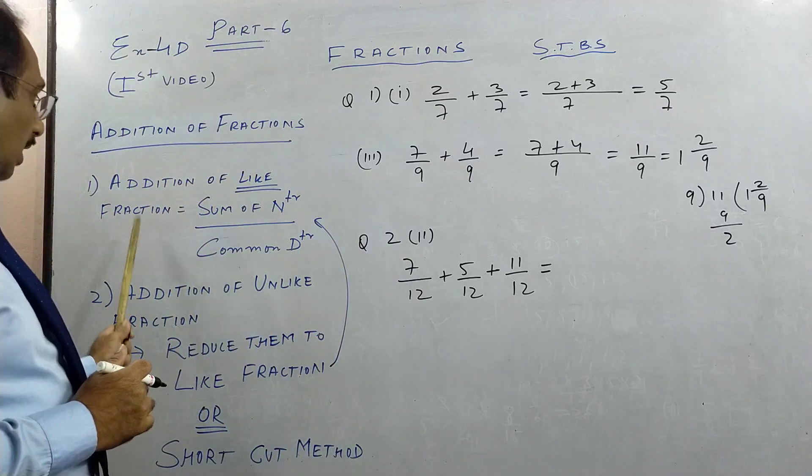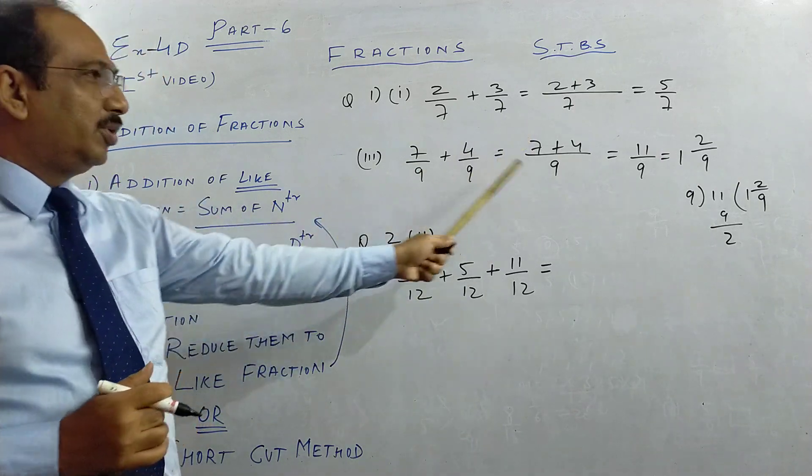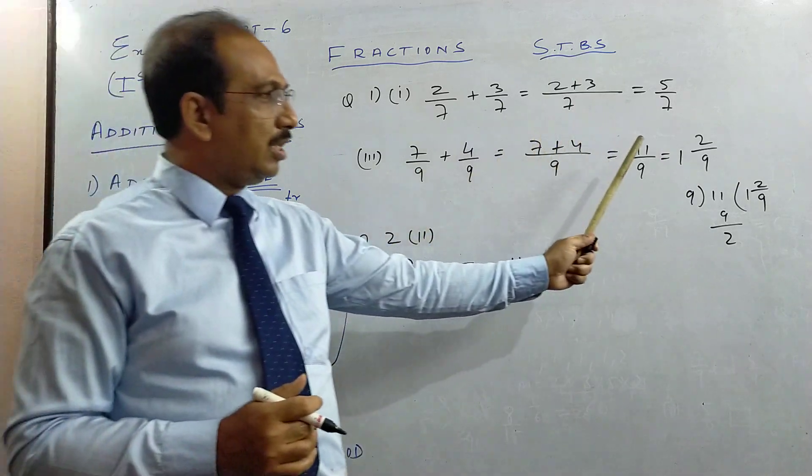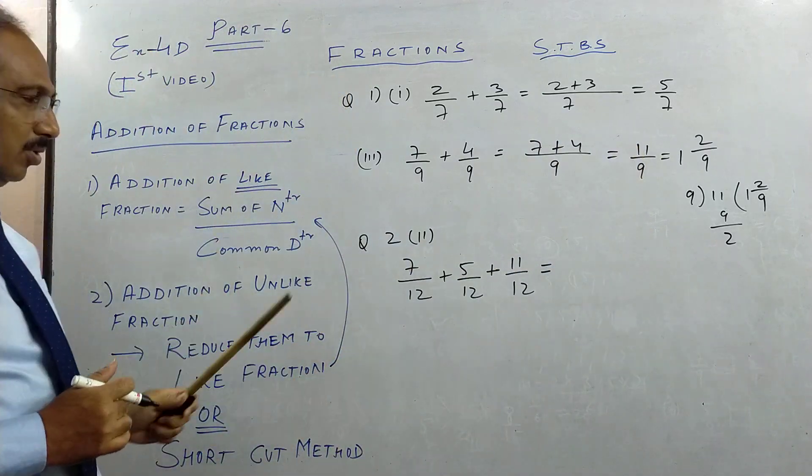So I get 1, 2 by 9. 9 ones are 9, 11 by 9. So how to convert? I have made a separate video in part 3 of fractions. Addition of like fractions: common denominator, sum of numerator.